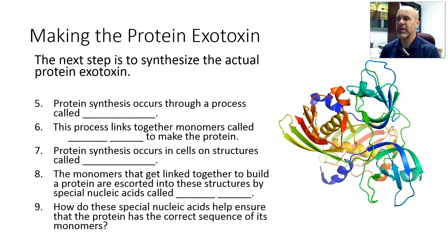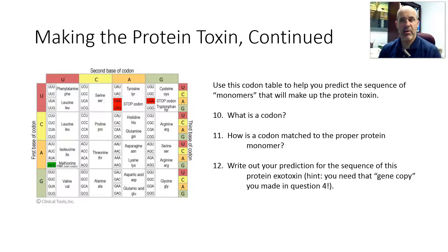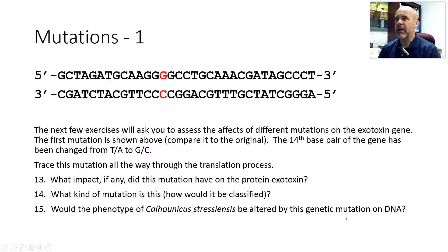There's also a terminology review section. Here's your codon table, like we talked about in the Chapter 8 lectures. In those lectures I did an example of a protein translation problem where we started with the messenger RNA and translated out the sequence of amino acids — you'll be doing something similar here. At that point you've reviewed the terminology and seen what happens with the normal version of the gene coding for the exotoxin.